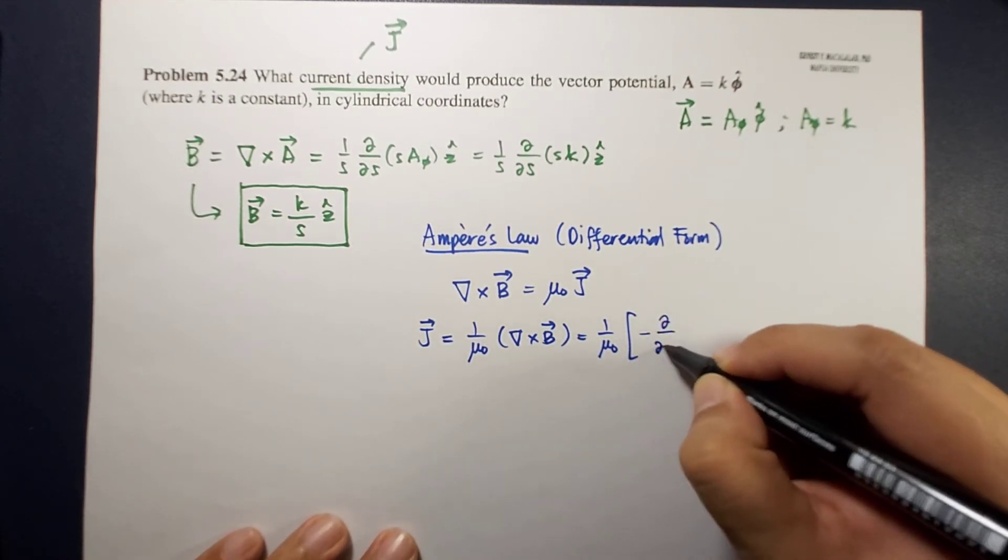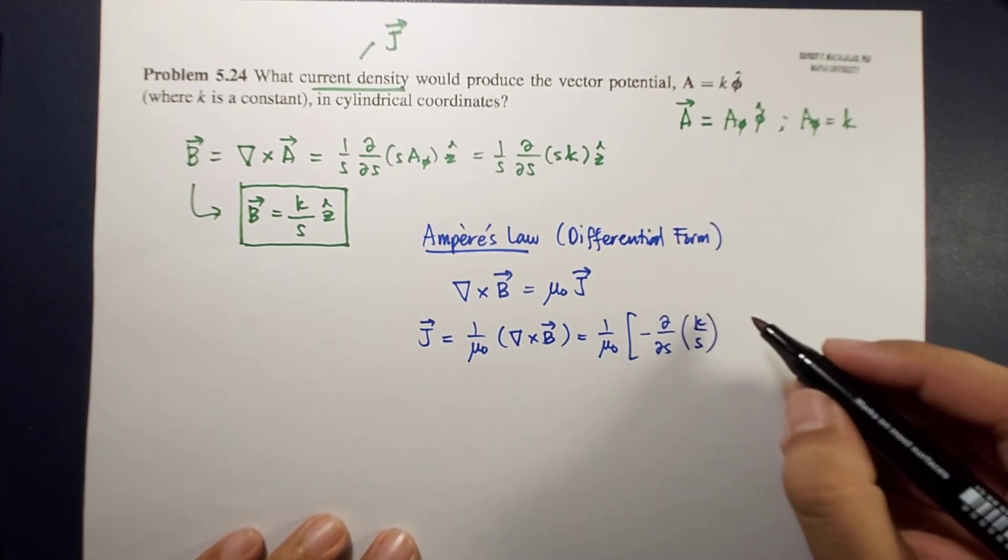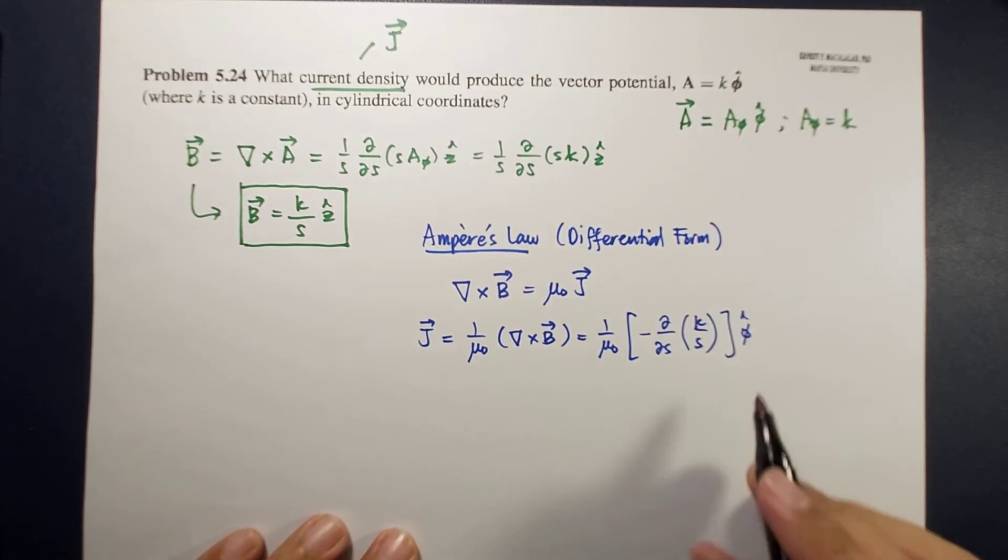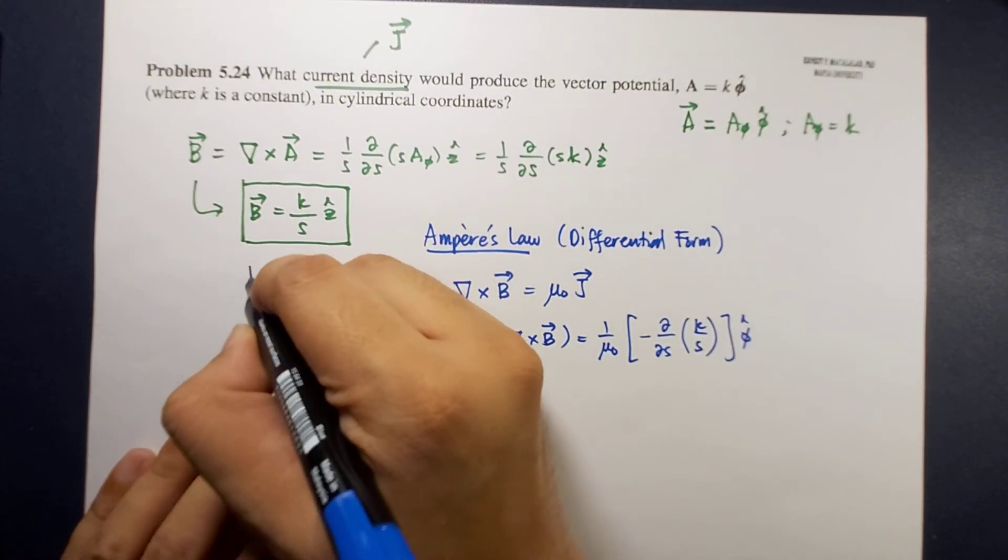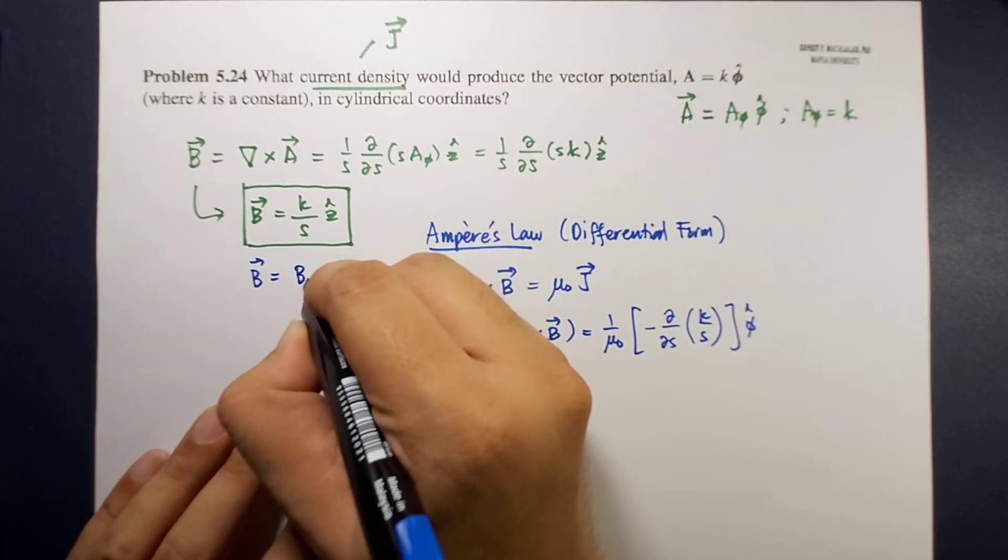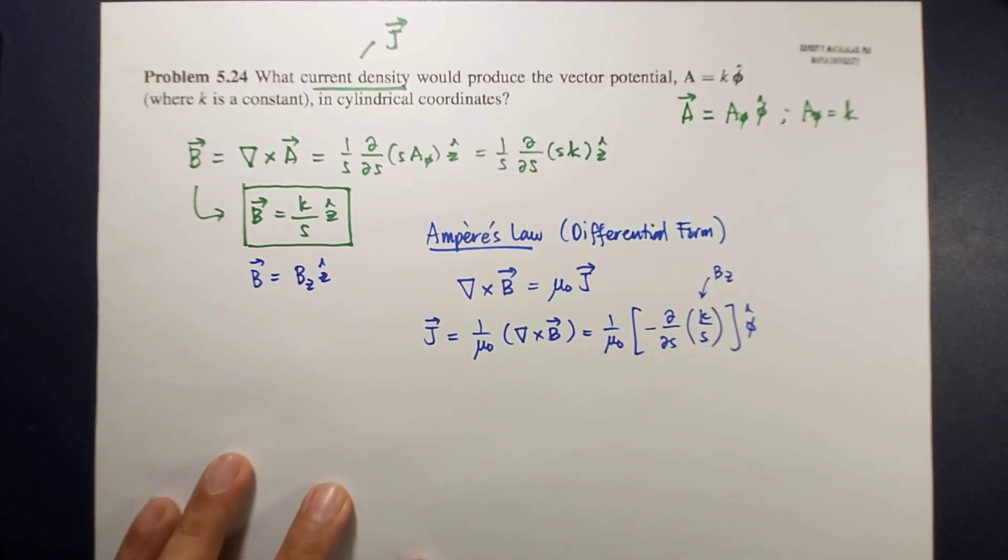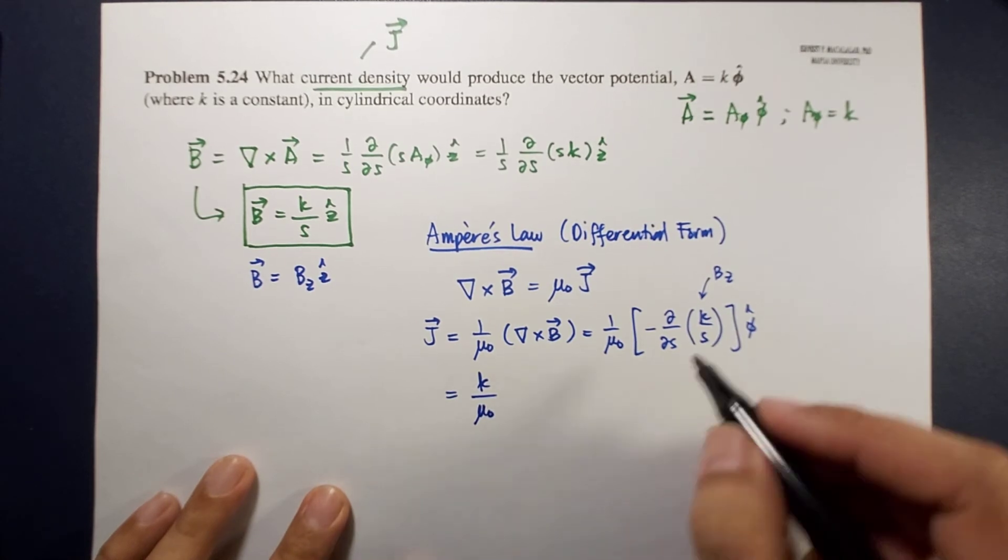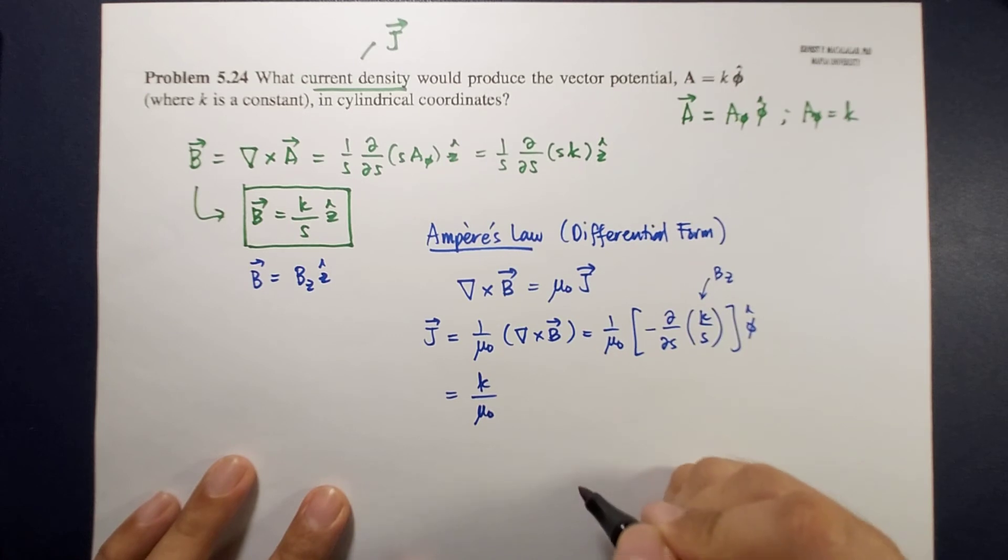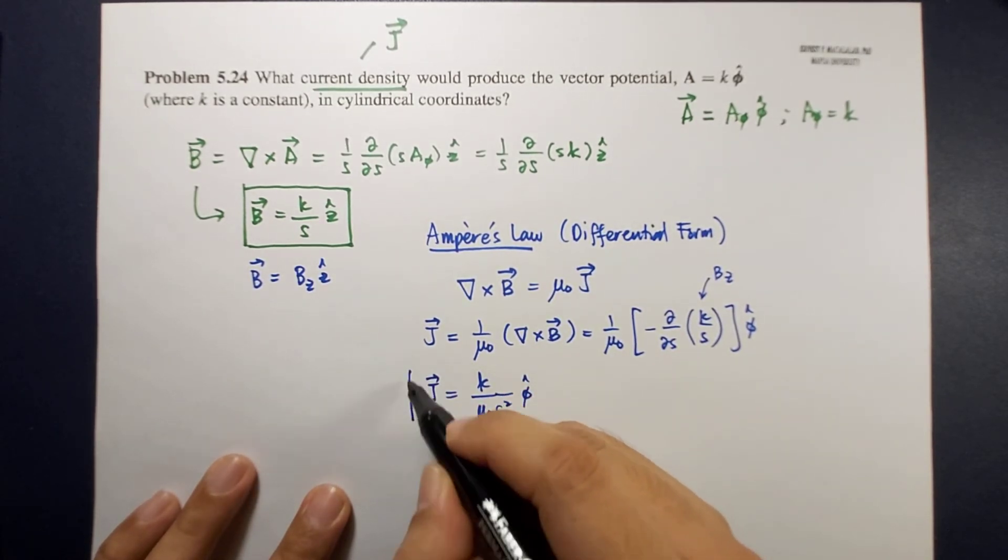This is negative partial derivative of s. As you will notice here, this form is different from this, because remember that B is along the z direction. So this is actually B z. Doing this differentiation, we now have k over mu naught times negative of negative 1 over s squared. So this is s squared, then phi hat.